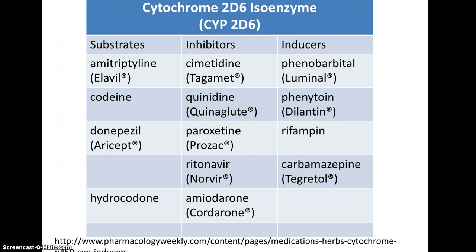The list of substrates included here is actually quite small. There are known inhibitors of CYP2D6, and inhibitors are substances that interact with the enzyme in such a way that they prevent or inhibit the enzyme from interacting with its substrate, thus preventing the metabolism of that substrate.